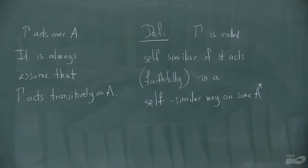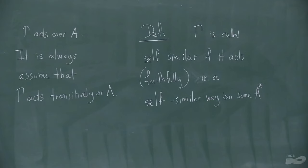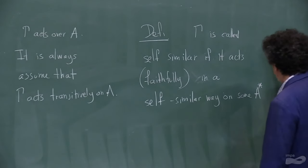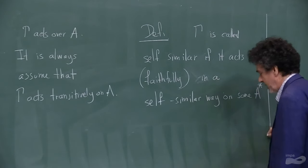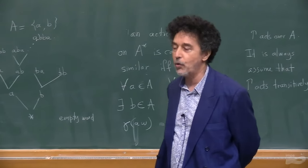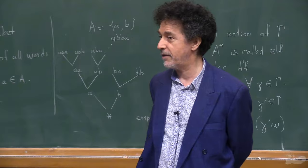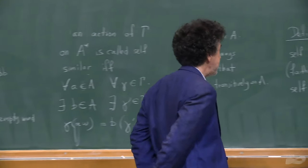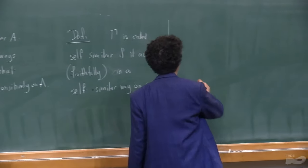The main definition is that gamma is called self-similar — the group itself is called self-similar — if it acts faithfully in a self-similar way on some self-similar tree A-star. The group is called abstractly self-similar if it acts faithfully, because of course if it's not faithfully it doesn't make sense, in a self-similar way on some tree. And of course it is interesting to know which groups are self-similar and which ones are not.